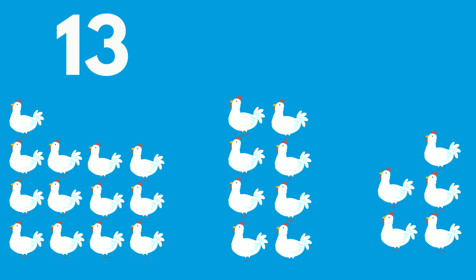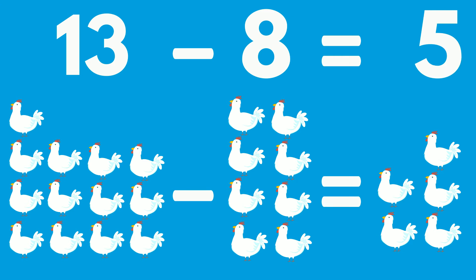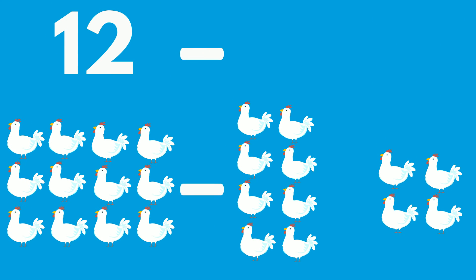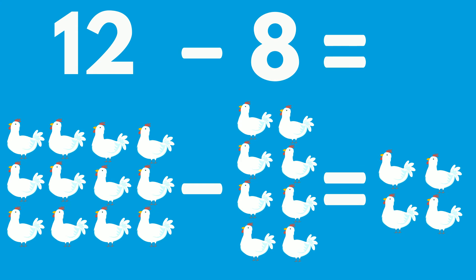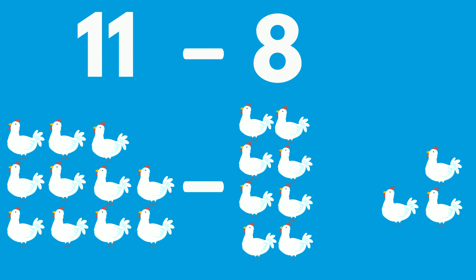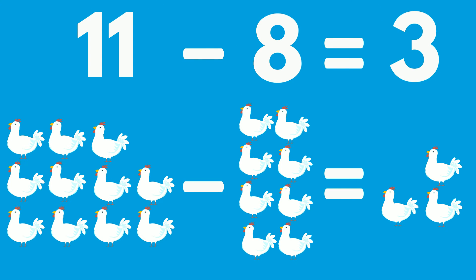13 chickens minus 8 chickens equals 5 chickens. 12 chickens minus 8 chickens equals 4 chickens. 11 chickens minus 8 chickens equals 3 chickens.